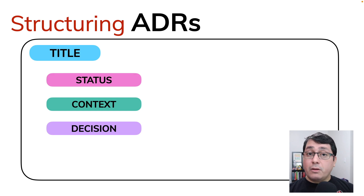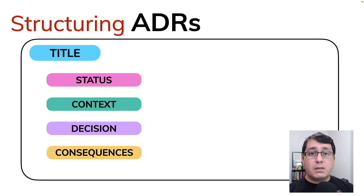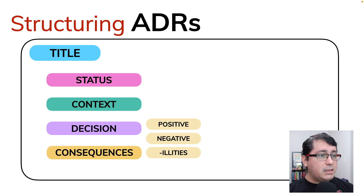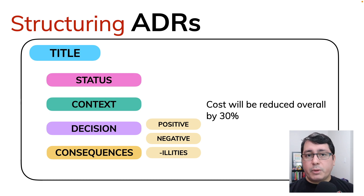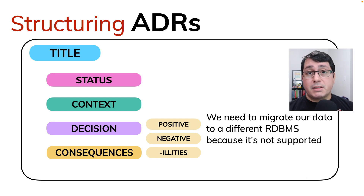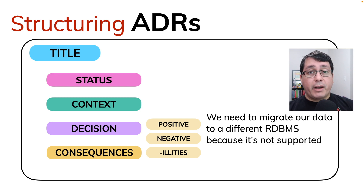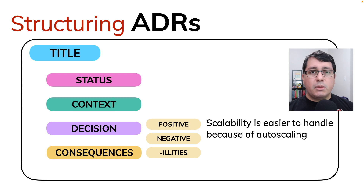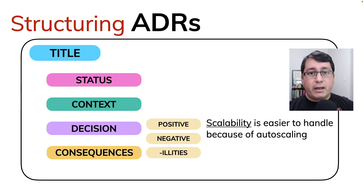Now what are the consequences? The consequences could be positive, negative, or affecting our '-ilities.' A positive example would be that costs are going to be reduced by 30%. The negative might be that the databases we're using are not supported by AWS, so we need to migrate to what AWS supports. A change in the '-ilities' would be that scalability is now improved because handling auto-scaling in AWS is significantly easier.